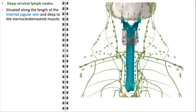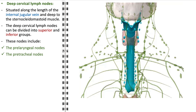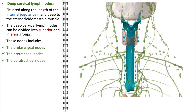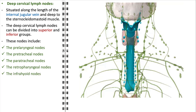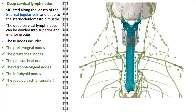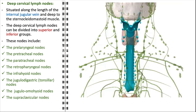The deep cervical lymph nodes are strategically situated along the internal jugular vein and deep to the sternocleidomastoid muscle, categorized into superior and inferior groups. Key nodes include the pre-laryngeal nodes, which drain the area around the larynx; the pre-tracheal nodes, targeting the tracheal area; the paratracheal nodes, focusing on the sides of the trachea; the retropharyngeal nodes, responsible for lymph from the pharyngeal region; the infrahyoid nodes, covering the area below the hyoid bone; the jugulodigastric (tonsillar) nodes, crucial for draining the tonsils and posterior pharynx; the jugulo-omohyoid nodes, handling the area around the omohyoid muscle; and the supraclavicular nodes, located above the clavicle, playing a vital role in draining the upper chest and parts of the arm.